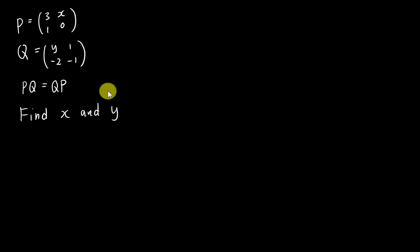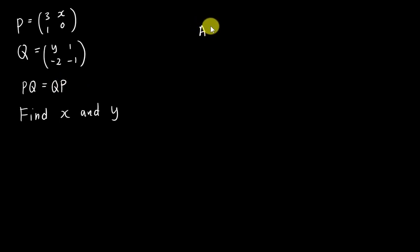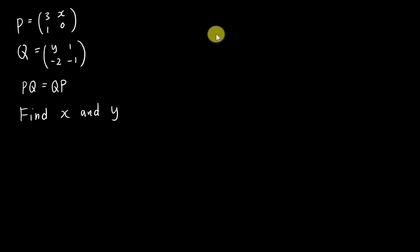For a question like this, the first idea you must know is that in the matrix world, PQ is not equal to QP. Normally you cannot simply assume PQ equals QP unless the question, like this one, tells you that PQ is equal to QP. In the matrix world, matrix A multiplied by matrix B is not equal to matrix B multiplied by matrix A unless the question says so.